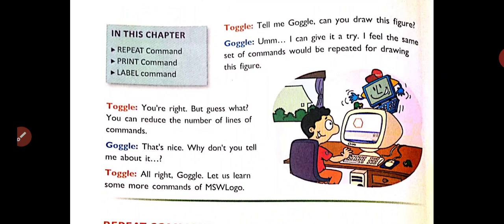Toggle said, you are right. But guess what? You can reduce the number of lines of command. Google says, that's nice. Why don't you tell me about it? Toggle says, alright Google, let us learn some more commands.